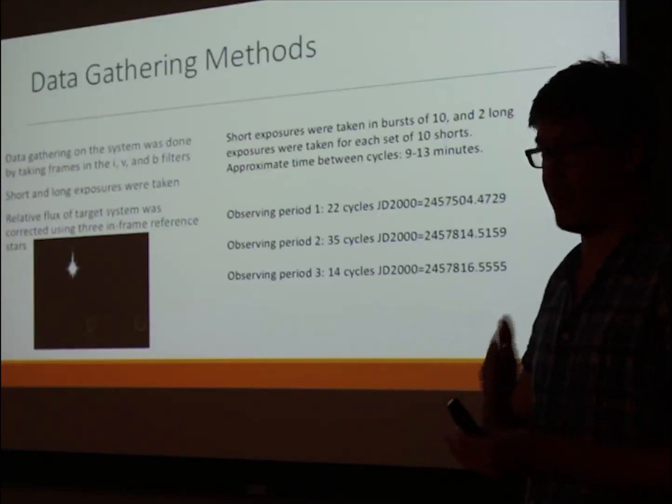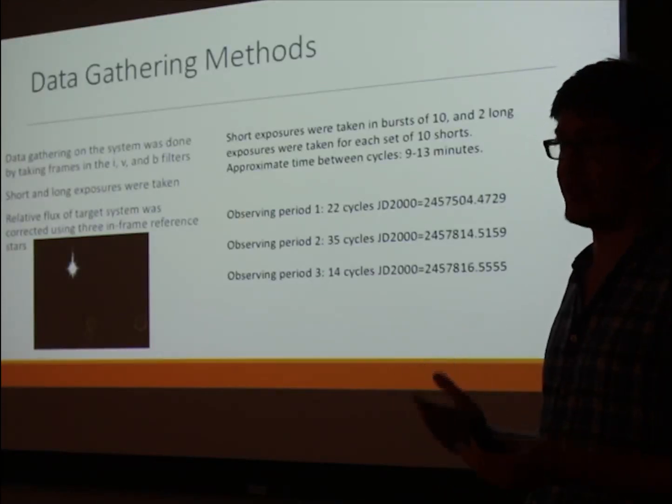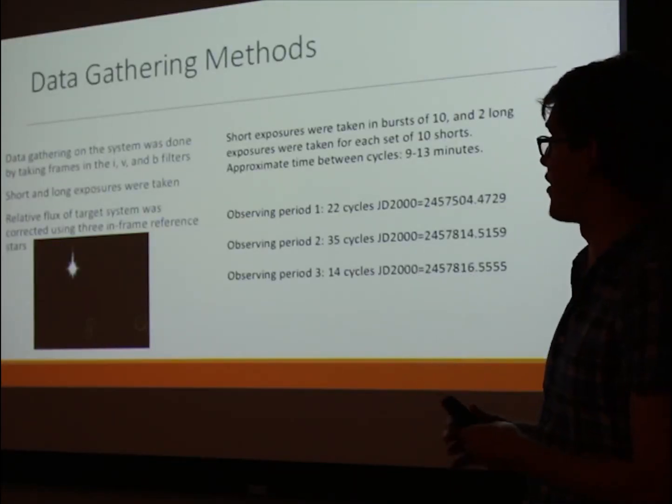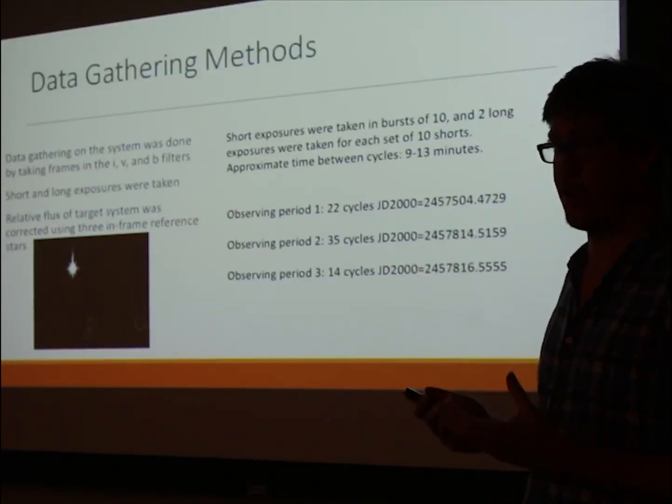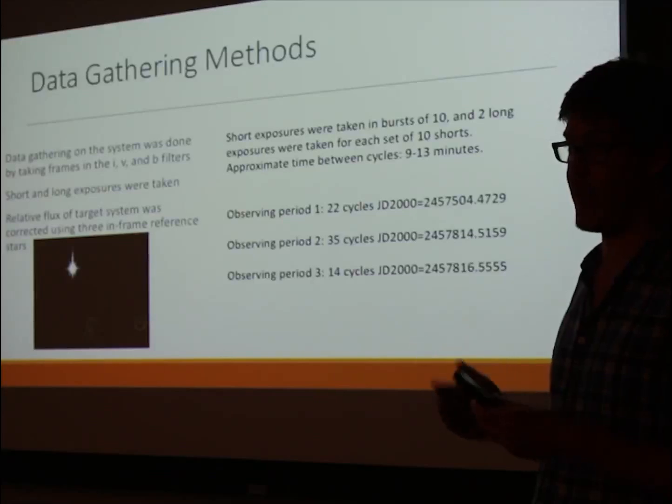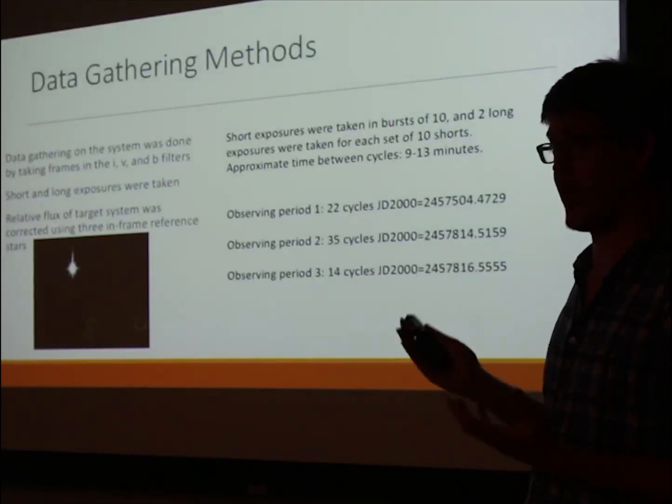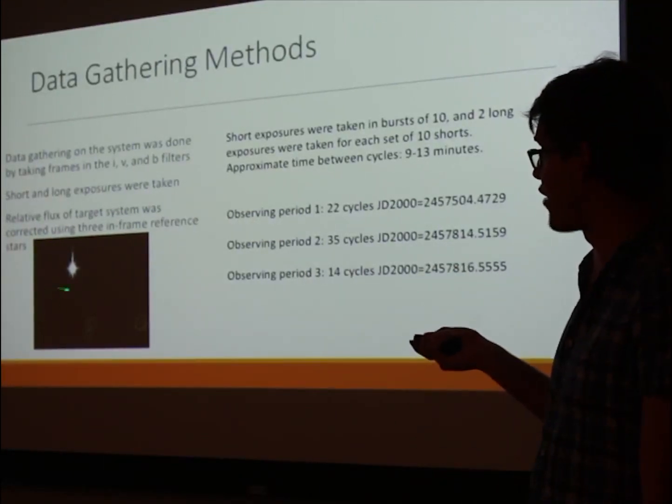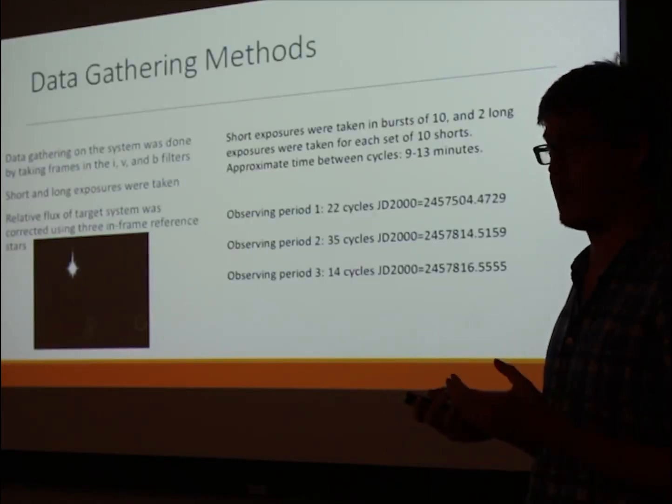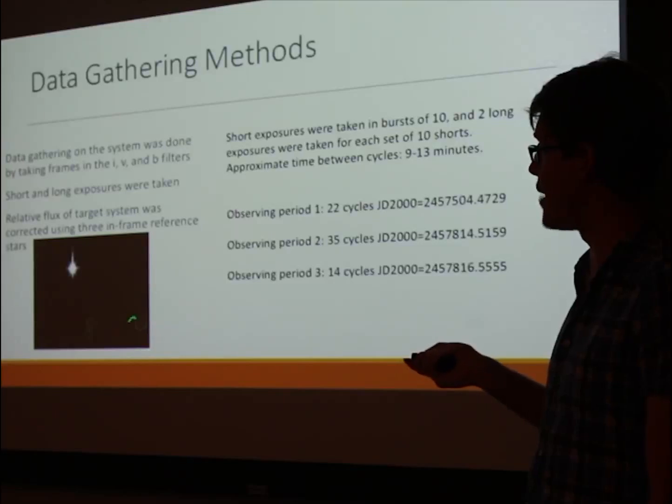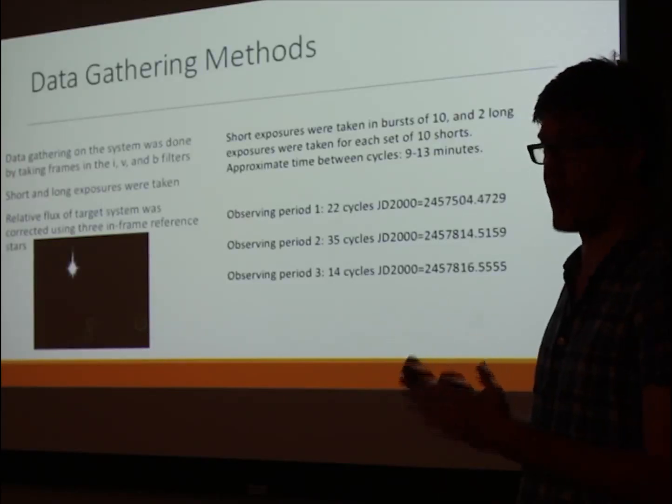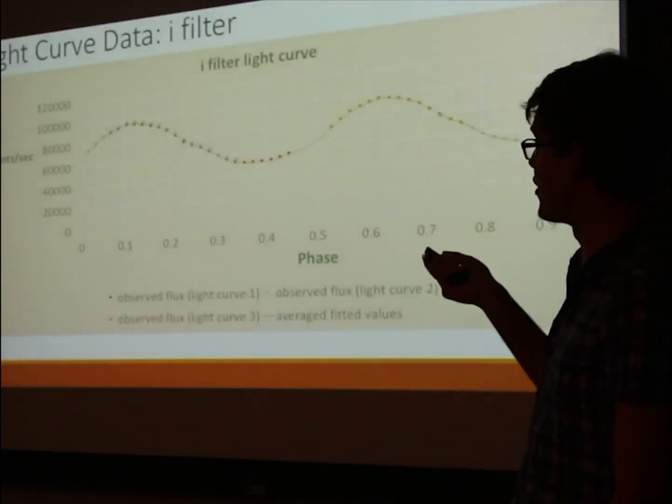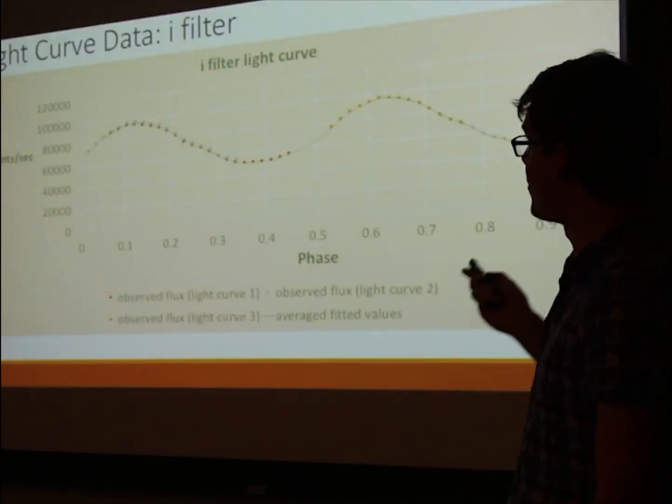What these filters do is they collect light at very specific wavelengths, which allow astronomers to create color images of stars and compare different stars and things in space to other objects. The I filter stands for near-infrared—it's about 800 nanometers wavelength. V is visible light, and B is blue light. I collected short frames to get flux data on the star itself, and I also did long frames which allowed me to get some dim stars in the frame, which I can use as reference stars to correct for the relative flux of the target system.